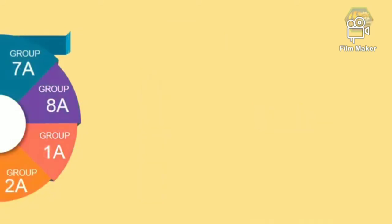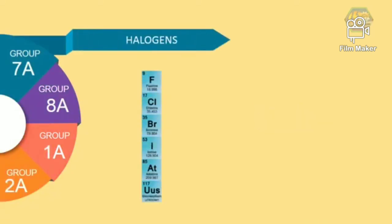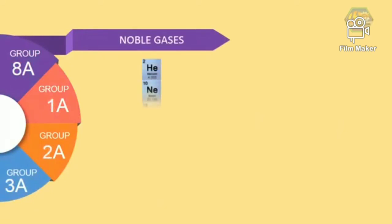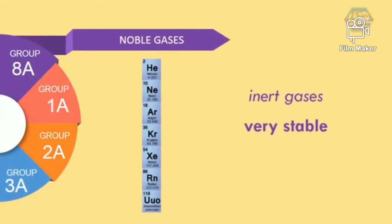Group 7A is called halogens which comes from Greek word meaning salt producing. Group 8A is called noble gases which refers to the inert gases and they are very stable that makes them extremely non-reactive.